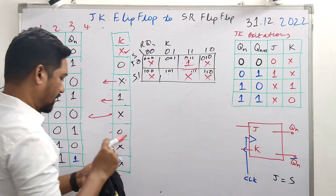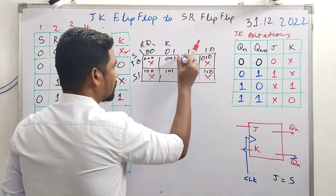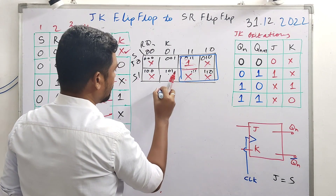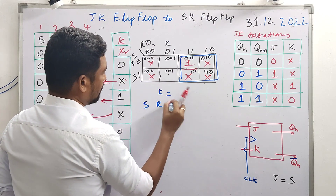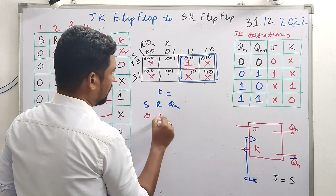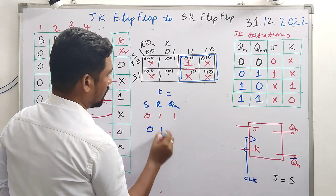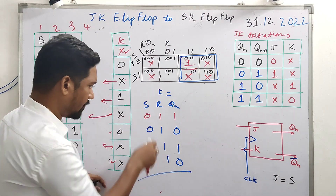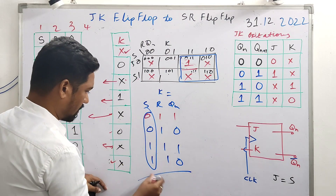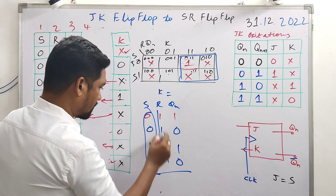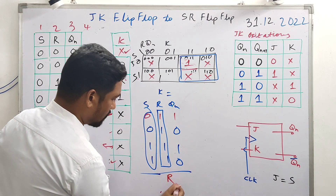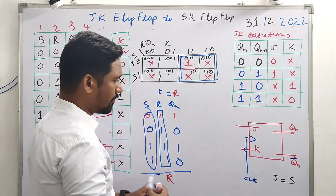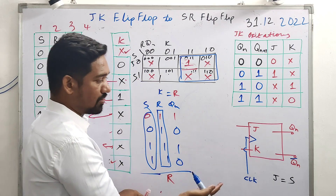Looking at the K-map for K: the quad grouping covers cells 0,1,1 and 0,1,0 and 1,1,1 and 1,1,0. This forms a constant column. We want K equal to some combination of S, R, Q(n). The result: R remains constant throughout these combinations.